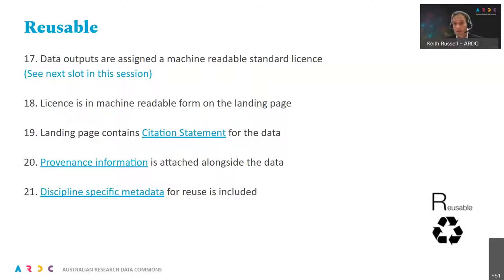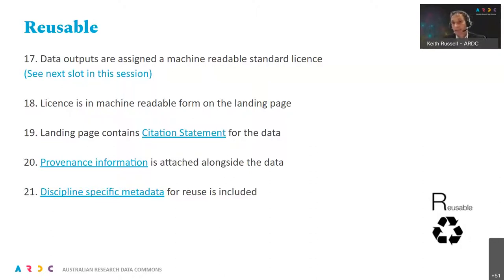Under Findable, we talked about a series of metadata fields to make sure data is discoverable. As the researcher actually wants to use the data, they will probably need more contextual information to better understand under which circumstances the data was created and which methodologies were used. There are disciplinary specific metadata standards for that. If you have such discipline-specific metadata, please attach it alongside the data because that will make it a lot easier for a researcher wanting to reuse the data to better understand how the data was created.